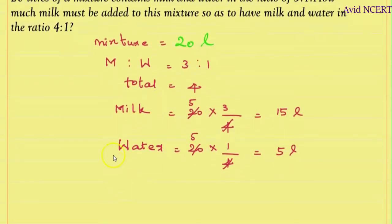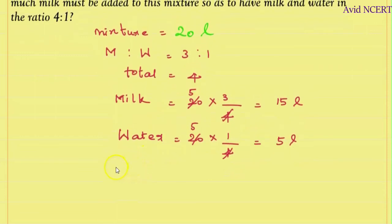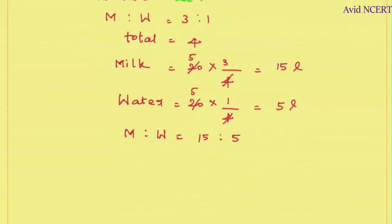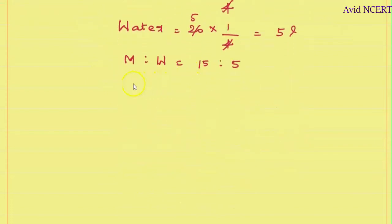Now we know the ratio of milk to water is 3:1, which is 15:5. We need to find how much milk must be added to have the ratio 4:1. We know there is 5 liters of water and 15 liters of milk.